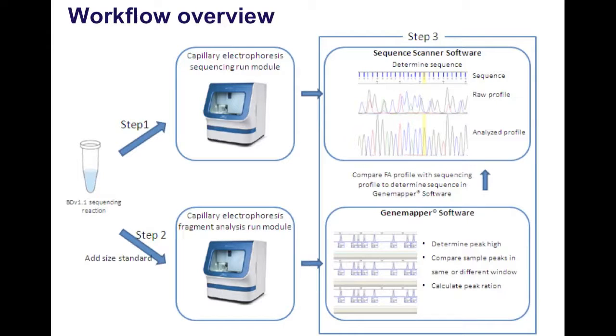In the second step, you would add a size standard into the very same sequencing reaction and rerun it on the same instrument under fragment analysis mode. You would collect the data as dot FSA files and read those data in GeneMapper software. Here you would zoom into your regions of interest. In GeneMapper, you can capture the peaks by clicking on them and extract the peak height and peak area information, which allows you to do calculations on the amount of the particular nucleotides of interest.